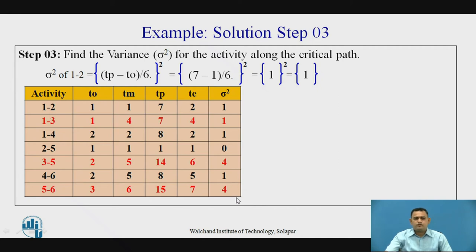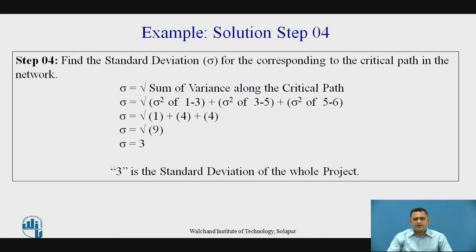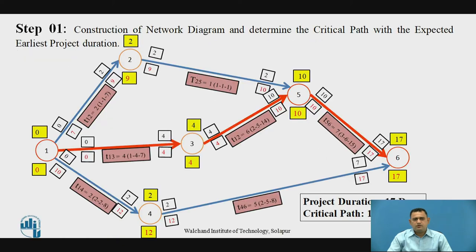Step 4 is to find the standard deviation. Sigma equals the square root of the sum of variances along the critical path. The critical path is 1-3, 3-5, and 5-6, so we take the variance of only these activities. If there are two critical paths, we select the one with the larger number of critical activities.